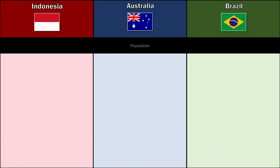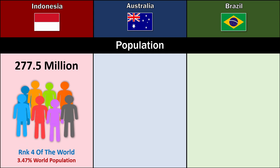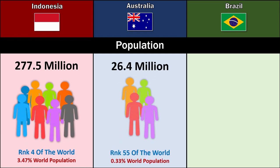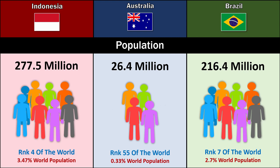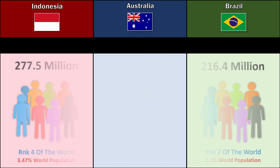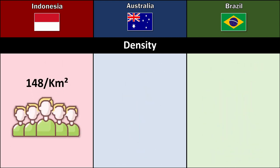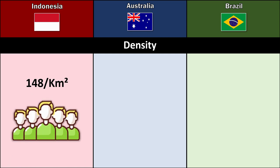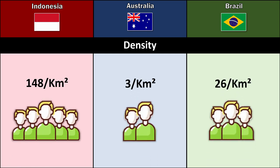Population: Indonesia 277.5 million, Australia 26.4 million, Brazil 216.4 million. Density: Indonesia 148 per square kilometer, Australia 3 per square kilometer, Brazil 26 per square kilometer.